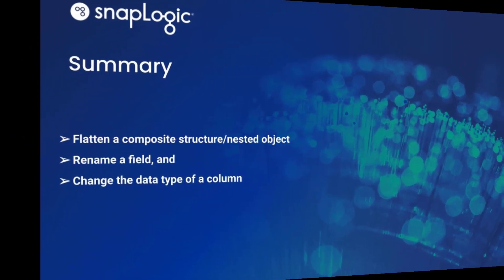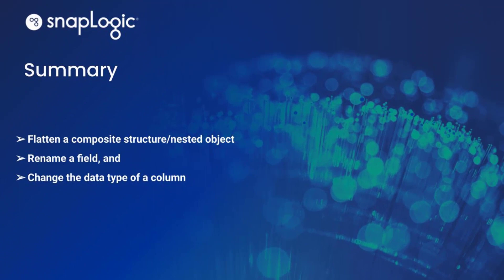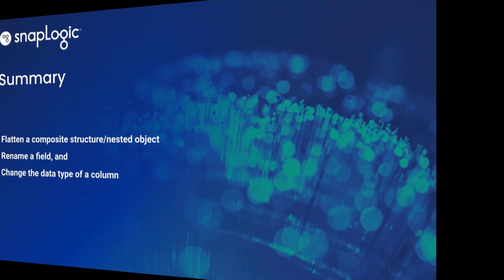In this video, we learned how to use Autoprep to flatten a composite structure, rename a field, and change the data type of a column.